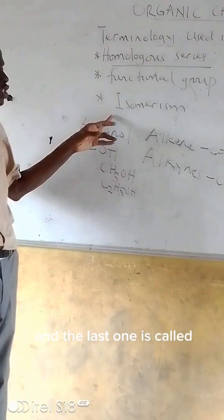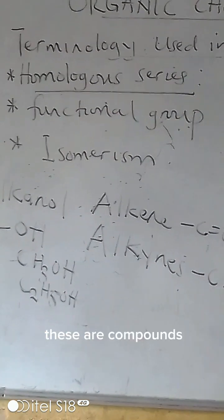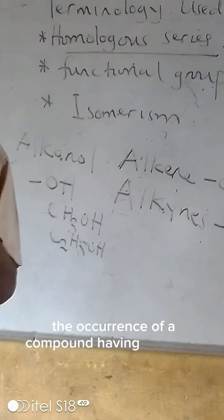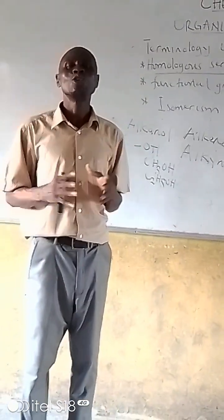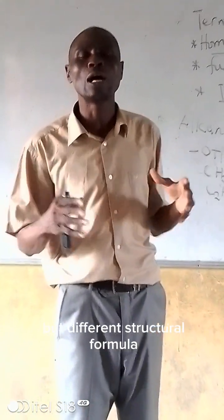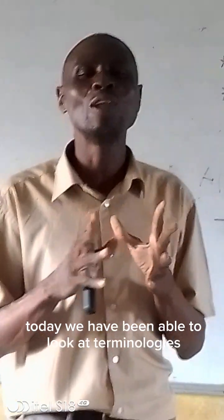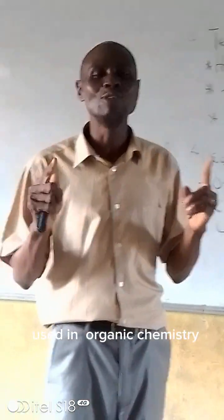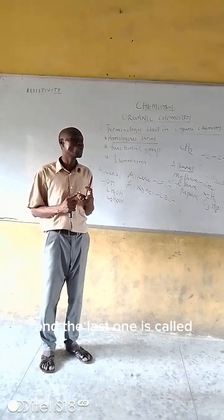And the last one is called isomerism. Isomerism is when compounds have the same molecular formula but different structural formulas. We call it isomerism. So today we have been able to look at terminologies used in organic chemistry: functional group, isomerism, and the homologous series.